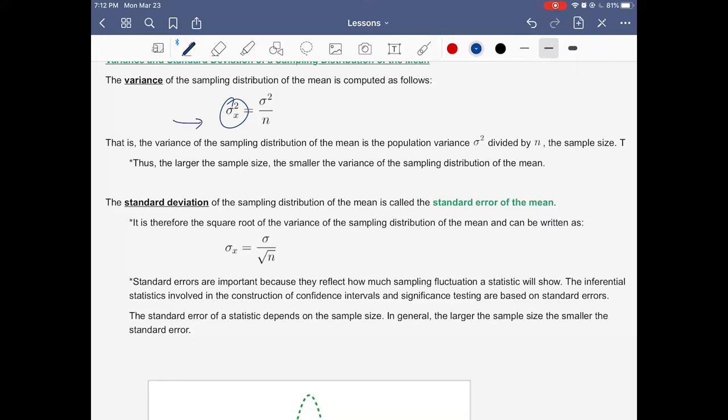When you see a subscript just like this one, that is talking about the sampling distribution. Since it is sigma squared, this is the variance. This one here is what we computed in midterms - population variance.